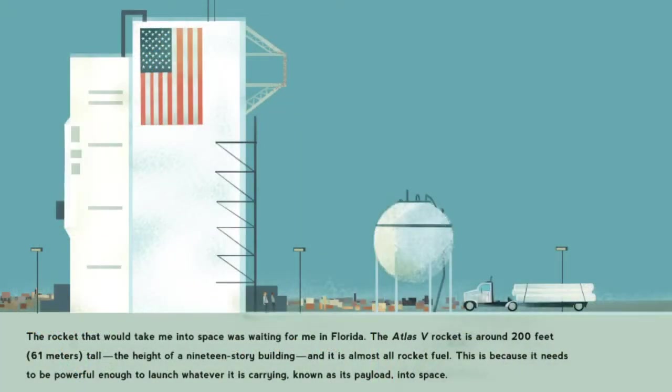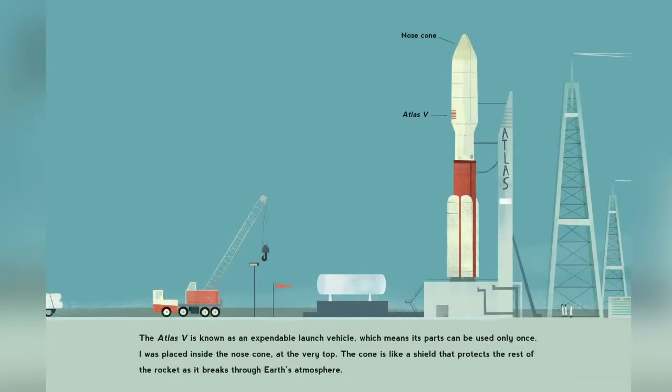The rocket that would take me into space was waiting for me in Florida, the Atlas V. The rocket is around 200 feet tall, the height of a 19-story building, and it's almost all rocket fuel. This is because it needs to be powerful enough to launch whatever it is carrying, known as its payload, into space. The Atlas V is known as an expendable launch vehicle, which means that parts of it can only be used once. I was placed inside the nose cone at the very top. The nose cone is like a shield that protects the rest of the rocket as it breaks through the Earth's atmosphere.